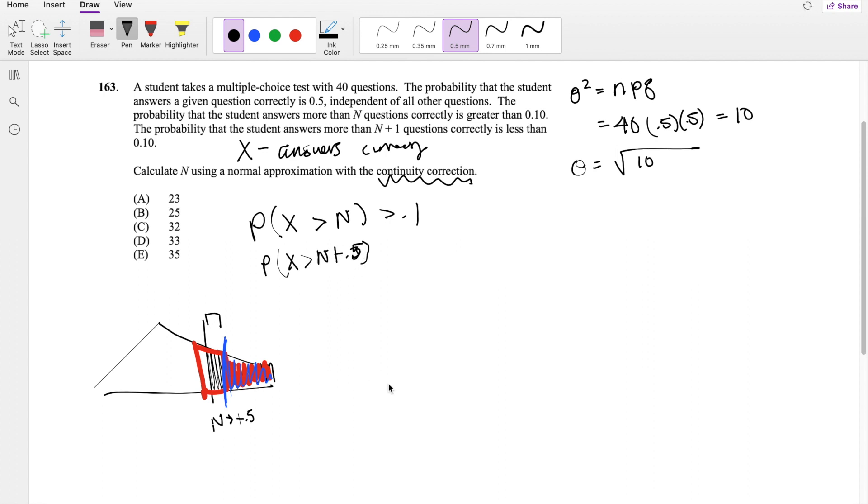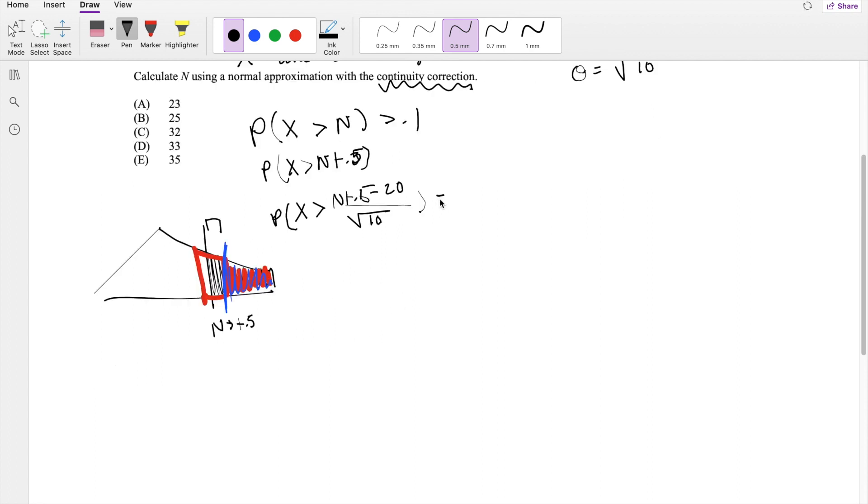And because we know that this is a normal approximation, we can just plug our stuff in here. So the probability that x is greater than N plus 0.5 minus mean, which is 20, divided by our standard deviation, square root of 10. So this equals greater than 0.1. So N plus negative 19.5 divided by square root of 10.